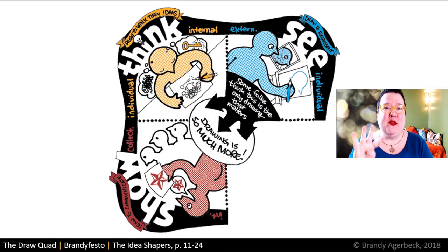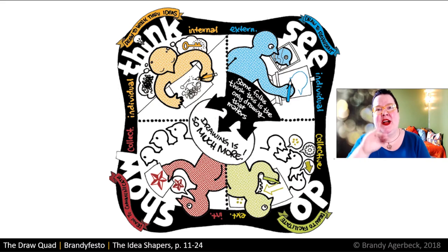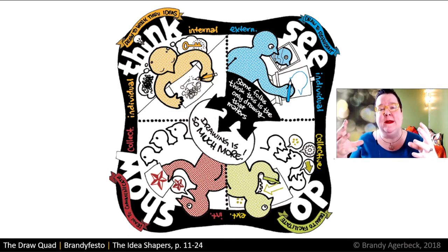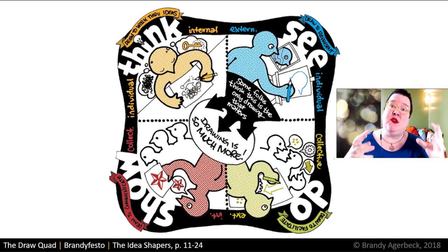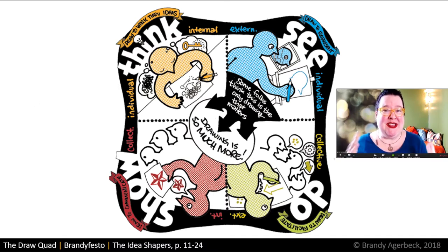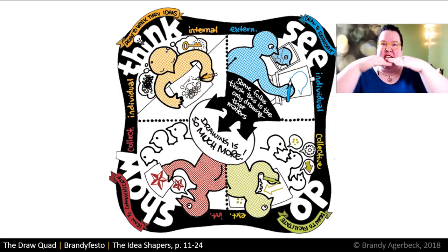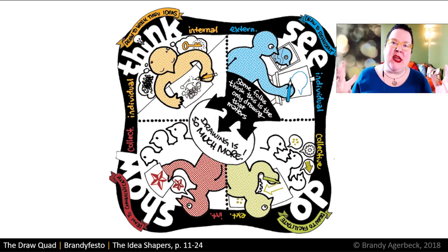And then finally, the fourth corner — the green corner — is drawing to do: drawing to make great things happen. This is where graphic facilitation lives. This is the external collective corner of the model, meaning drawing as a resource, using drawing to help the group do good work. Sometimes that works as being the single person in the room drawing for the group, like a graphic facilitator or graphic reporter. It can also mean using sticky notes for brainstorming sessions, sketching out prototypes — the whole umbrella of that green corner is drawing to do.